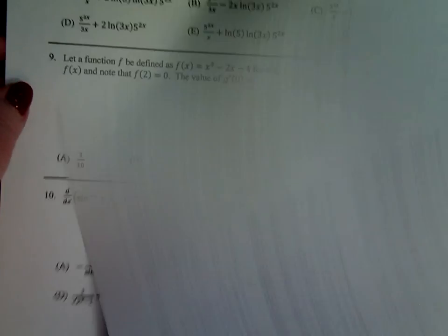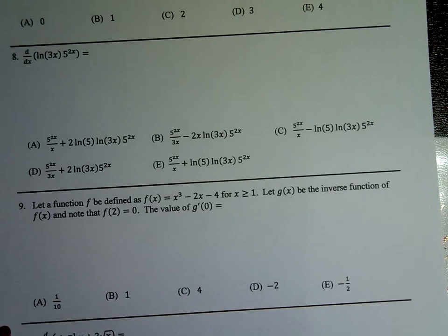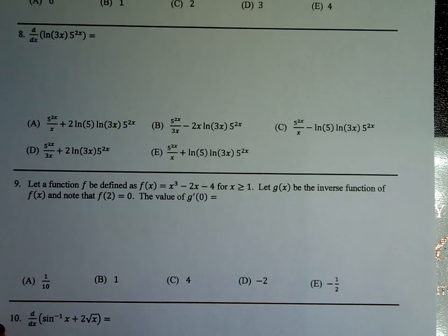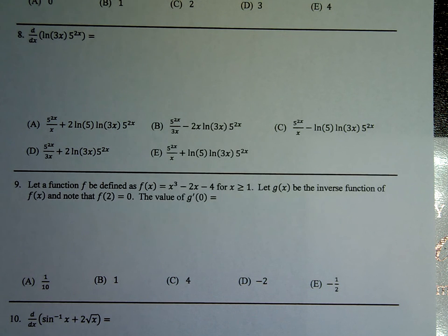All right, here's the last one. I want to do number 9. I think number 9 would be the next one that might stump you. Again, these inverses, for me, they tend to be the hardest. So I'm picking the ones that I would think were the worst. But let a function f be defined as f of x is x cubed minus 2x minus 4 when x is greater than 1. Let g of x be the inverse function of f of x, and note that f of 2 is 0. Find the value of g prime of 0.